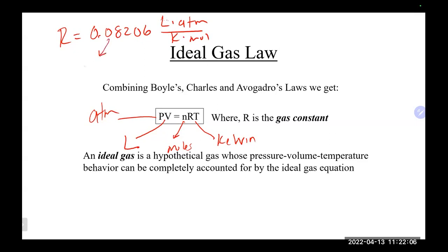R is 0.08206 L·atm/(K·mol). Some books round this to 0.0821 — either number is fine. R is a constant that you always have available to you. Problems often don't mention R explicitly, so you just need to remember you have it. You can look at the units of R to remind yourself what units all other variables need to be in.